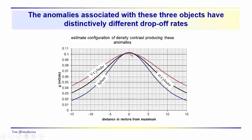So these anomalies are distinguishable just by looking at their relative drop-off rates, in a sense. But normally we'd go in there and we'd look at the diagnostic positions, calculate depths, assuming a sphere or a vertical cylinder or a horizontal cylinder.